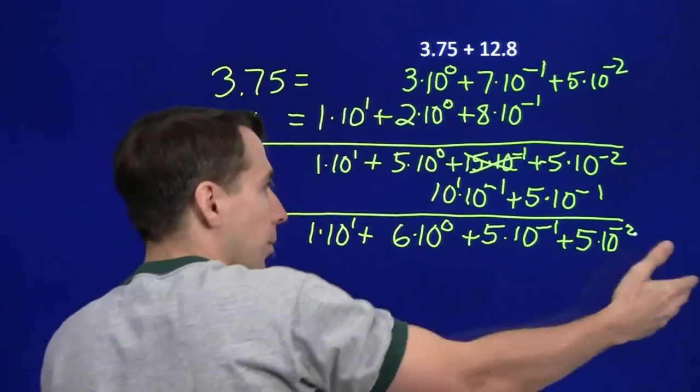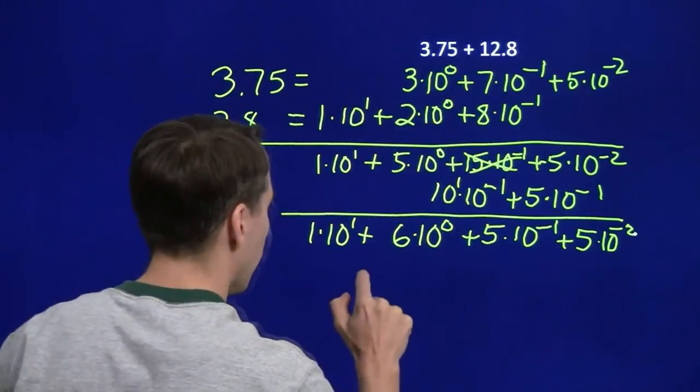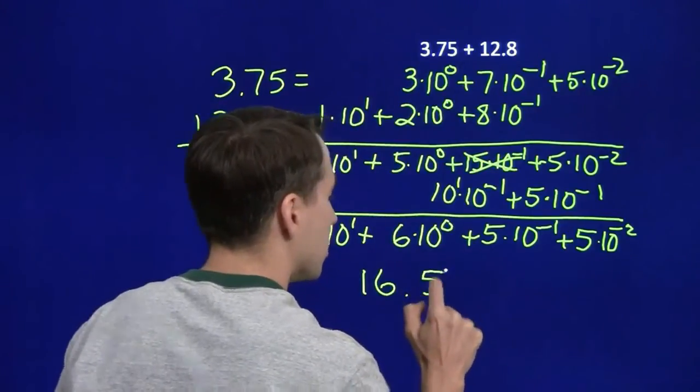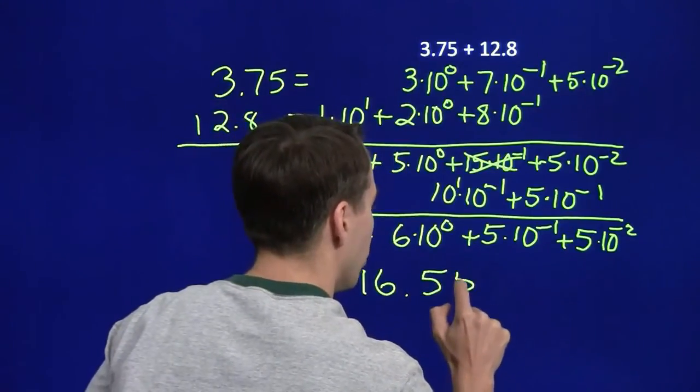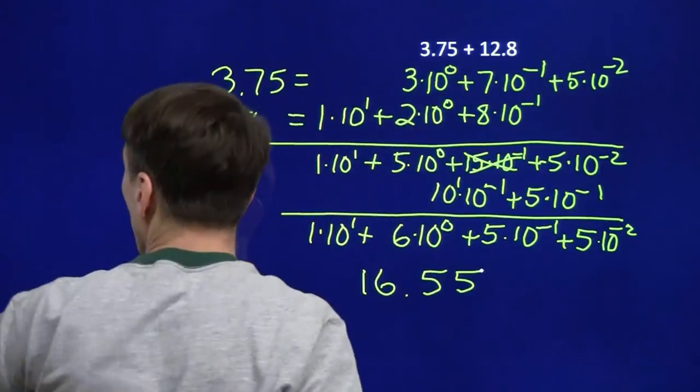And now, now I can just pound out the answer here. I can write down each decimal place. I've got the 1 in the tens place, the 6 in the units place, the 5 in the tenths place, and the 5 in the hundredths place. This is why decimal addition works the way you're used to.